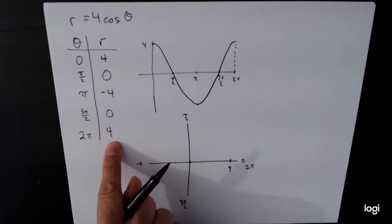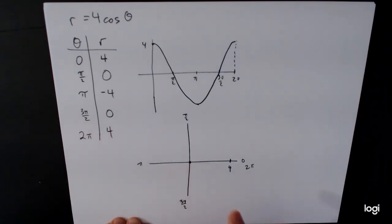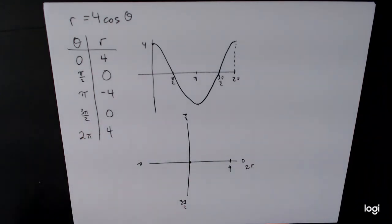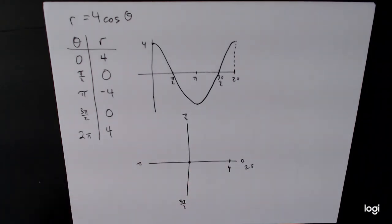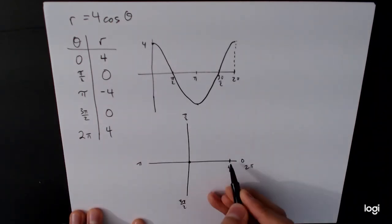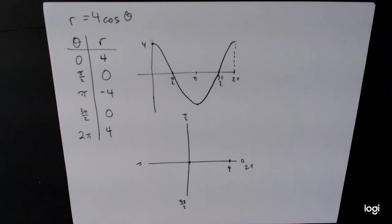And then when θ goes out to 3π over 2, it'll go back down to 0 again. And then for the last part, going back out to 2π, it's going to go back out again. Now, again, this is where students find themselves, get themselves into trouble. They draw these two points and they just go back and forth directly between them. That's not how this is going to work.